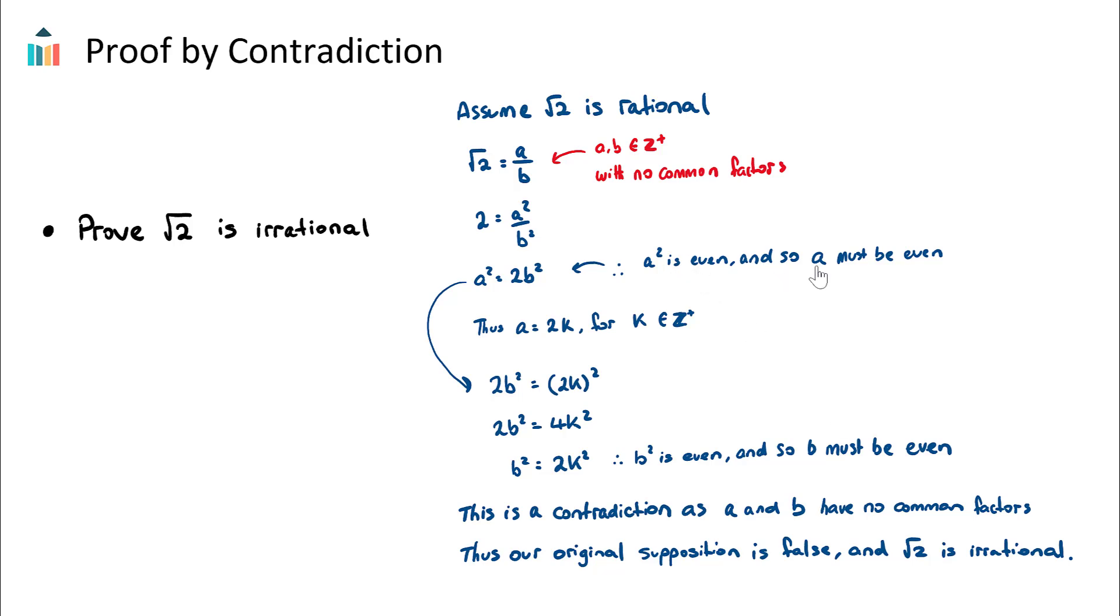Now if we know that a is even and b is even, well this is a contradiction. This is the key part here—this is a contradiction as a and b cannot have any common factors, and if they're both even they're both divisible by 2.